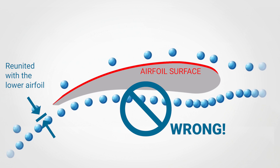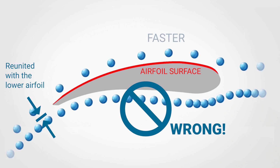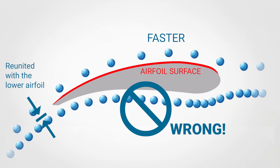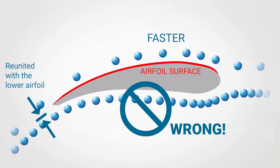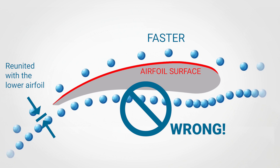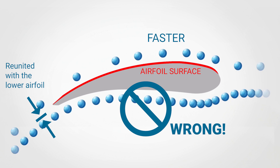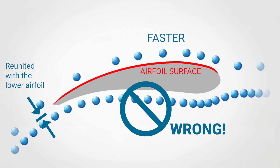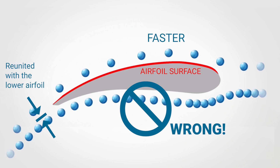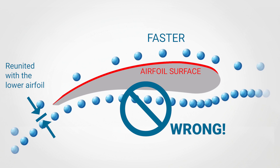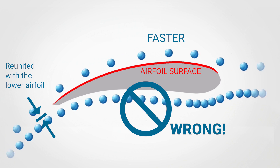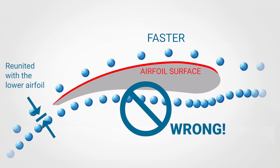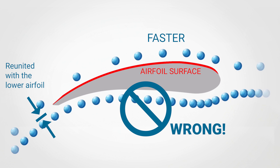So, the fact that the upper airflow is faster than the lower one is true, but based on a completely wrong conclusion. The upper airflow is not interested in rejoining the lower airflow at the exit of the airfoil. So, the difference in pressure phenomenon is explained by a completely false fact.